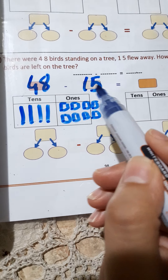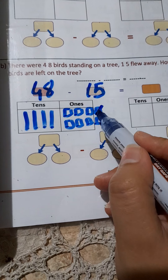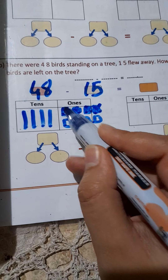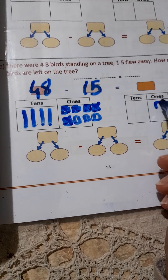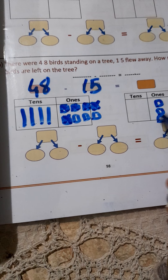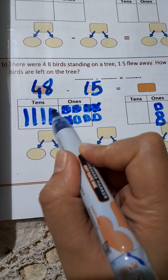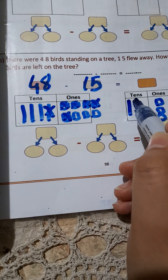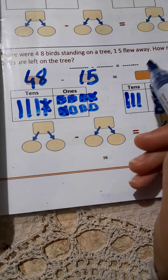So, I will take 5 from 8. I will cancel 5 ones. Count with me: 1, 2, 3, 4, 5. How many are left? 3. So, I will put 3 in ones. Now, move to tens: 4 minus 1. I will cancel 1. How many are left? 3. I will put 3 in tens. So, the result is 33.